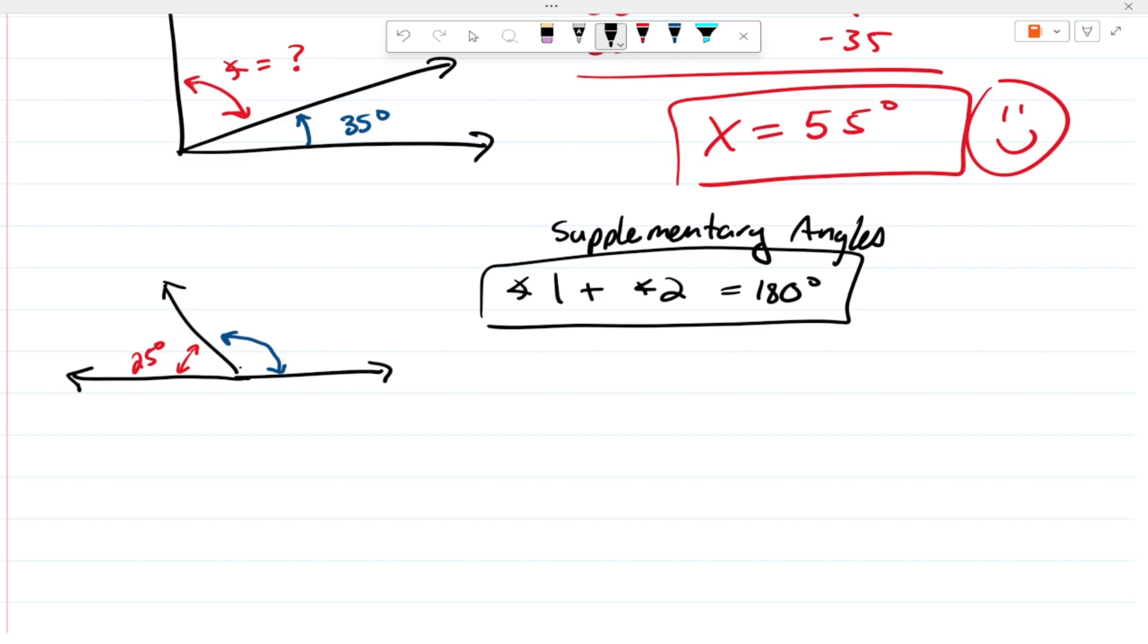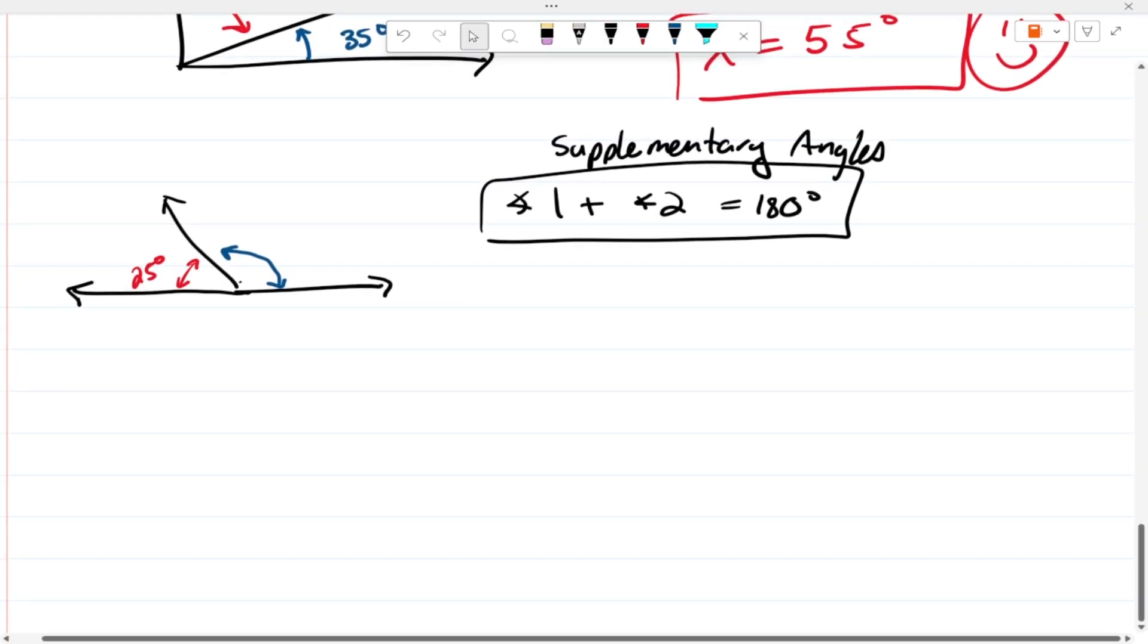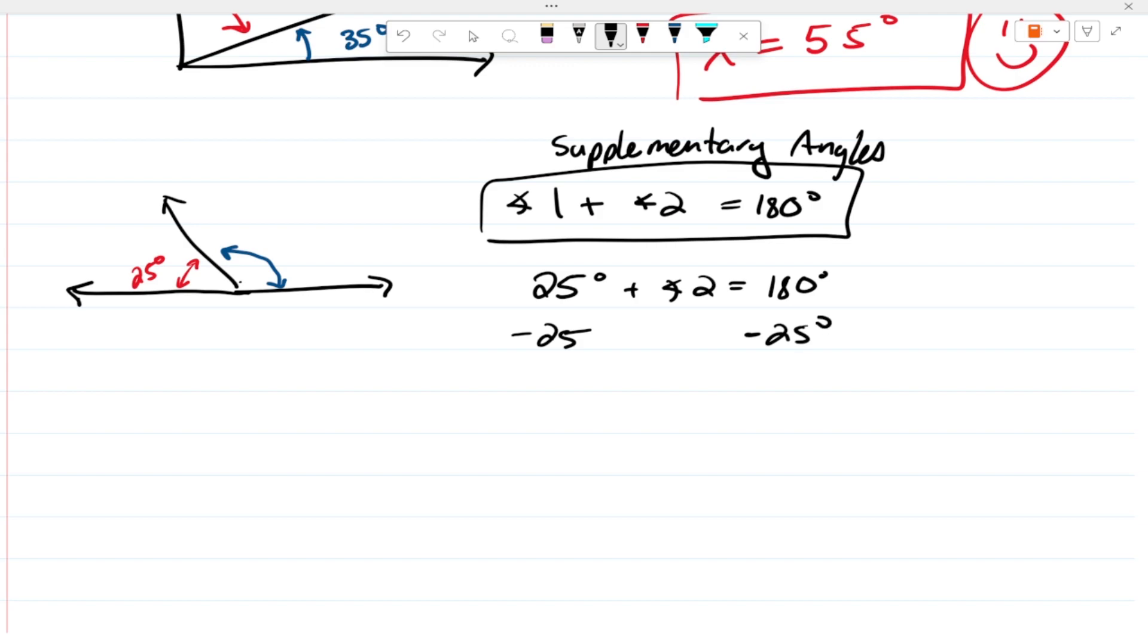So, if you look at this example right here, overall, we have a straight angle. We know one of them is 25. So, all we have to do is just find the other one. So, 25 degrees plus angle two equals 180 degrees. Subtract 25 from both sides of the equation. And that gives us angle two equals 180 minus 25 or 155 degrees.